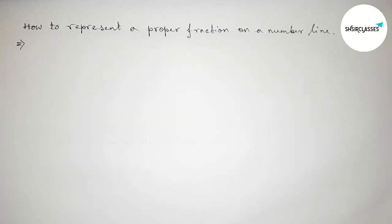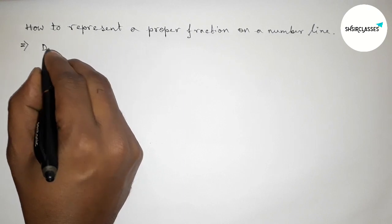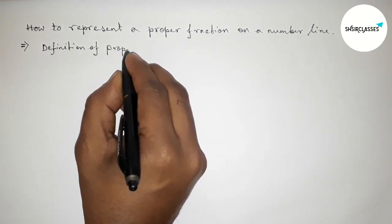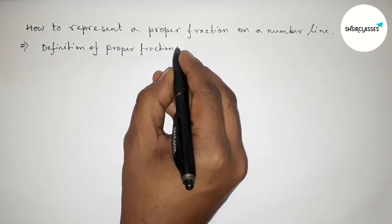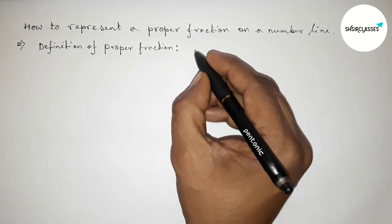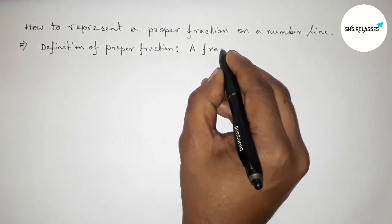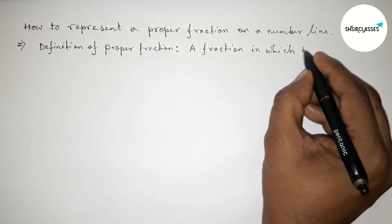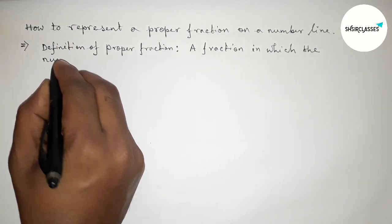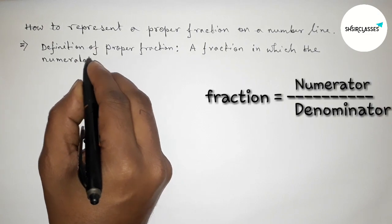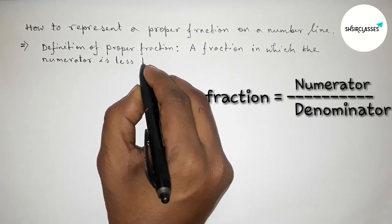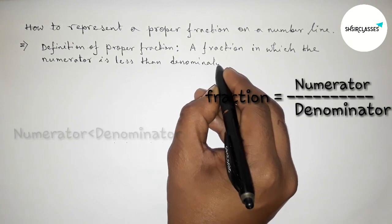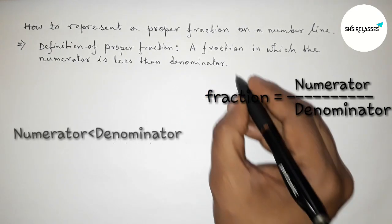First, let's discuss the definition of a proper fraction. A fraction in which the numerator is less than the denominator is called a proper fraction. The upper term is the numerator and the lower term is the denominator. If the numerator is less than the denominator, it is a proper fraction.